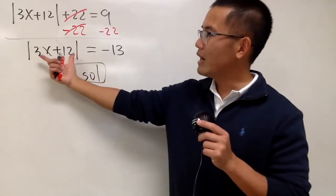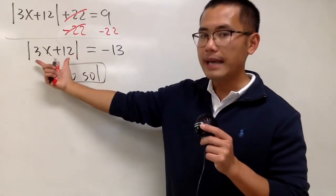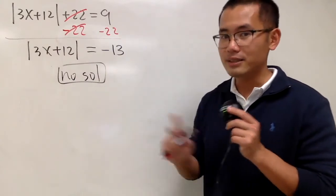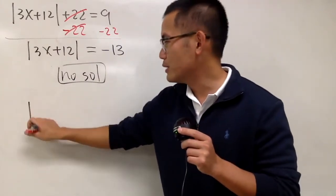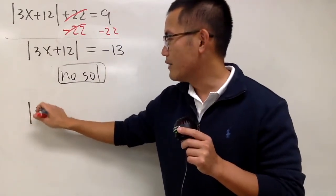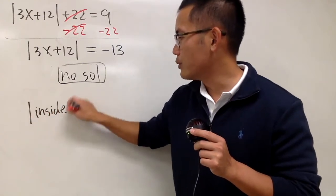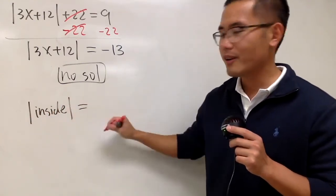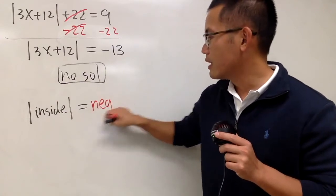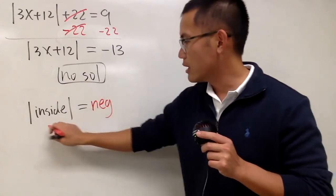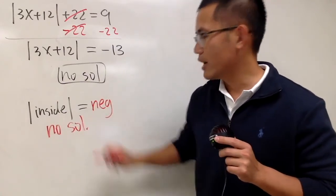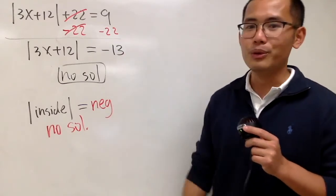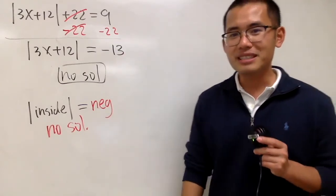Why? When you have an absolute value being isolated, if the right-hand side is negative, it has no solution. Whatever you have inside of the absolute value, if the output is a negative number, this right here has no solution. You don't even have to continue. If you do continue, you actually get some fake answers.